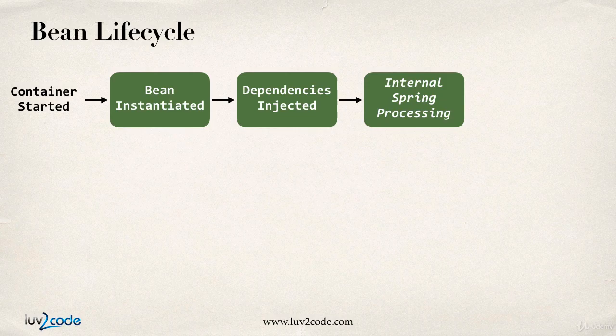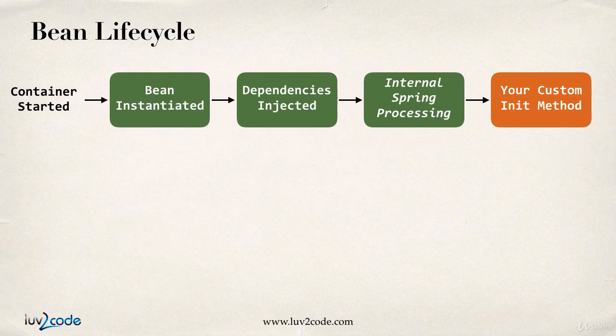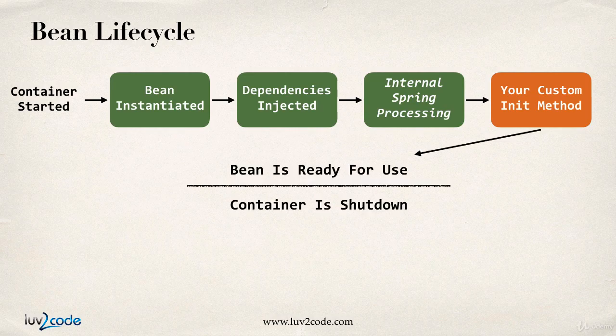Next, you have some internal Spring processing that occurs with the bean factory, and then you have the option of adding your own custom initialization code. At that point, the bean is ready for use, so you can call methods on it, do work with the bean, and so on and so forth.